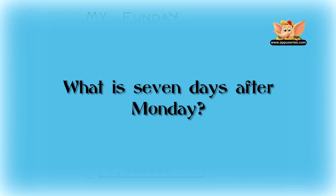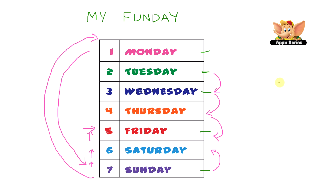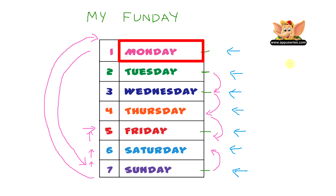What's seven days after Monday? Starting from Monday: one, two, three, four, five, six, seven. After Sunday, we get Monday again. So seven days after Monday is Monday.